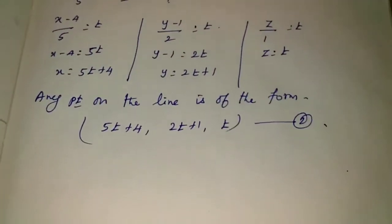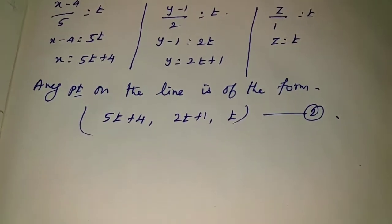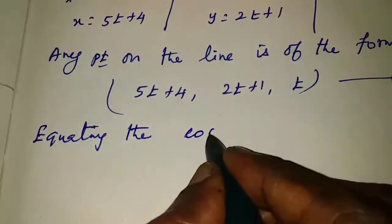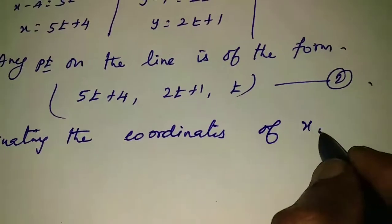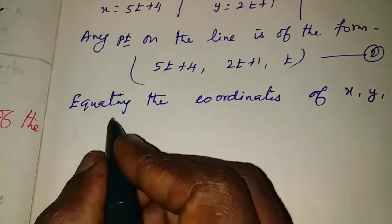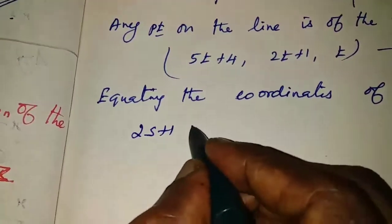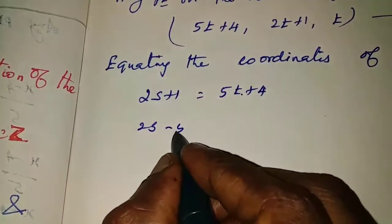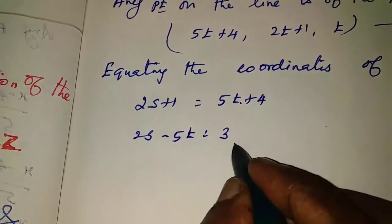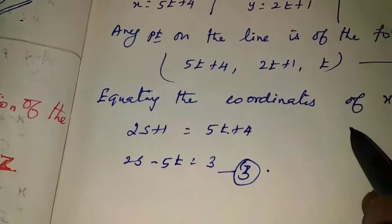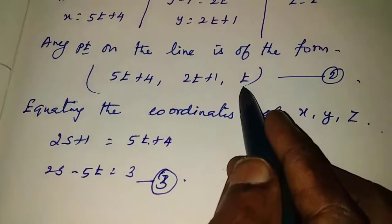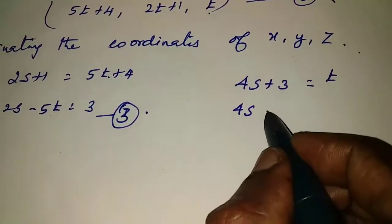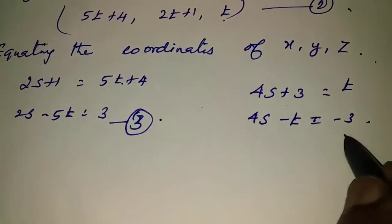Compare equations 1 and 2 by equating the coordinates of x, y, z. Equating the x terms: 2s plus 1 equals 5t plus 4, giving 2s minus 5t equals 3. This is equation 3. Next, equating the z terms (the easiest): 4s plus 3 equals t, giving 4s minus t equals minus 3. This is equation 4.